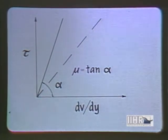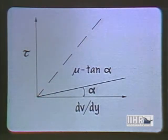A line with a steep slope would thus indicate a fluid with a higher viscosity, and a line with a less steep slope, one with a lower viscosity.